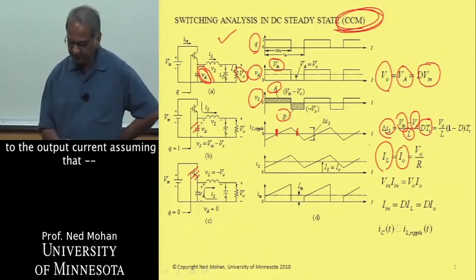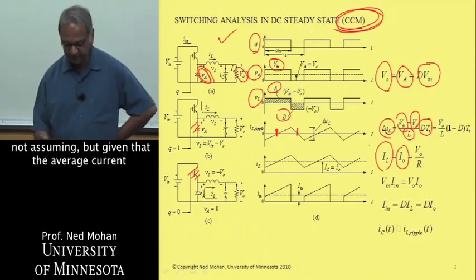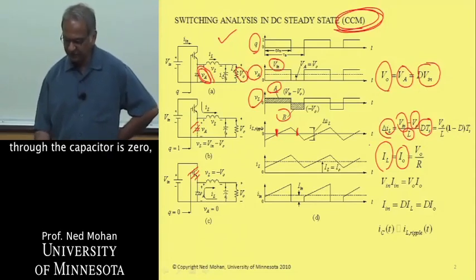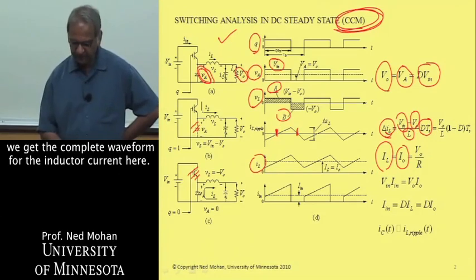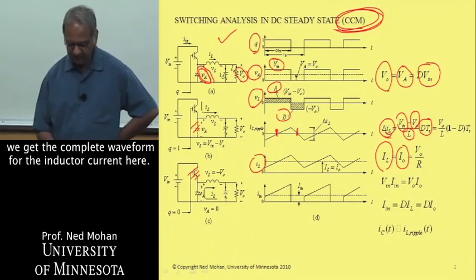And the average value of inductor current is equal to the output current, given that the average current to the capacitor is zero, and if we can superimpose this ripple on top of this average inductor current, we get the complete waveform for the inductor current here.